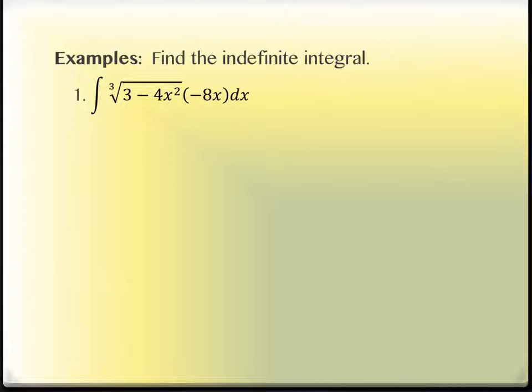If I'm looking at this, do I see a product? Yes, definitely a product. What piece of this looks like it's inside of something else? 3 - 4x². So we're going to write down u = 3 - 4x². That's part of it. You have to write this substitution down. Then you're going to take the derivative of it and write it as du equals.